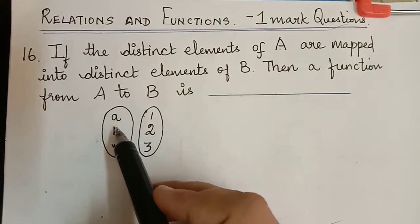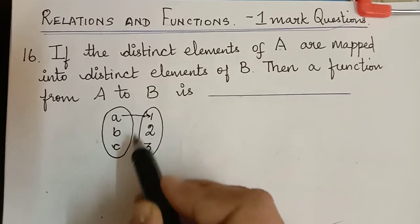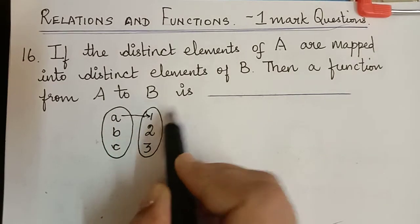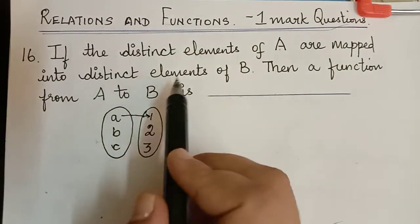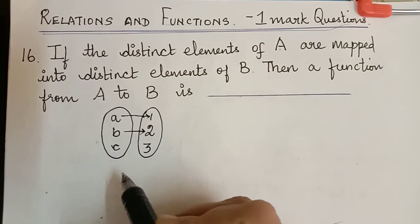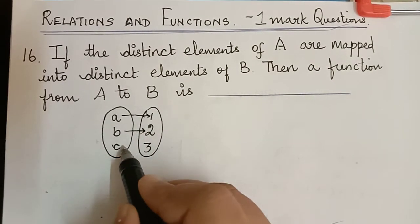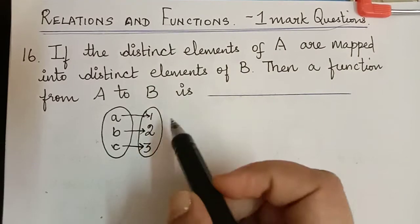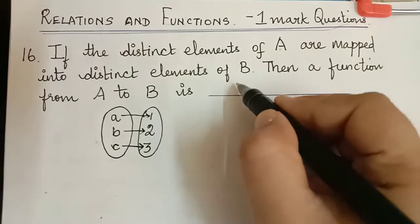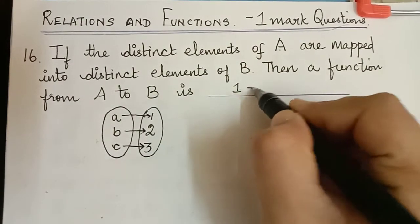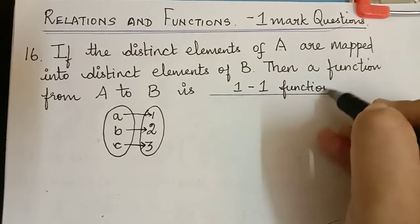These distinct elements are mapped into distinct elements of B. So A is mapped to 1. Now B cannot be mapped to 1 because the elements of B are also mapped to distinct elements. So it should be mapped to some other element, and C cannot be mapped to 1 and 2, so C has to be mapped to a distinct element 3. When we have a mapping of this kind, it is called a one-to-one function.